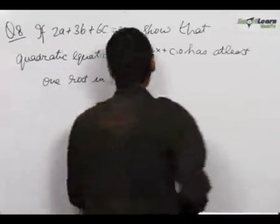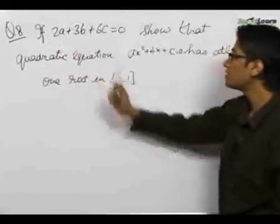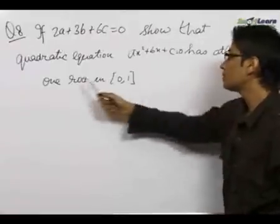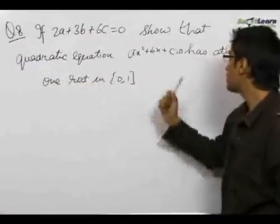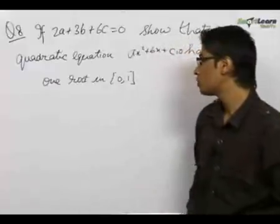The next problem which we have is a very important problem. It says if 2a plus 3b plus 6c is equal to 0, then we need to show that quadratic equation ax square plus bx plus c has at least one root in the given range of 0 to 1.